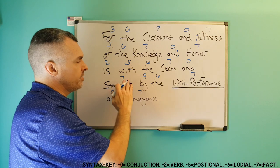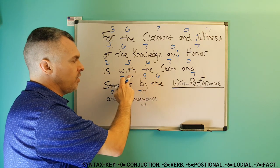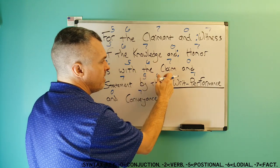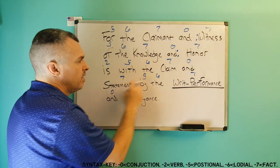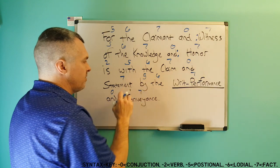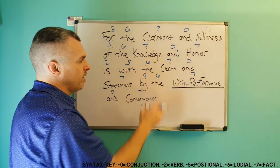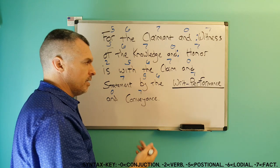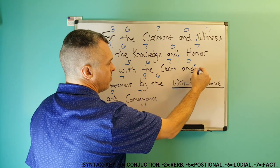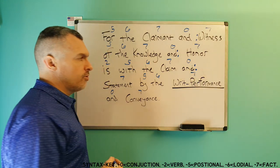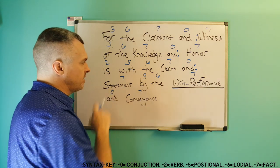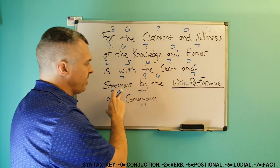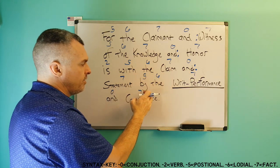Now we move on to the possessive and the authority. 'With' is a possessive positional. So 'with the claim and statement' — 'claim' and 'statement' are tied together by 'and,' and they've both been positioned by 'with the.' Again, some people like to put a full colon after the 'and' so that it would read 'with the claim and with the statement.' And then we move on to the authority: 'by the.'